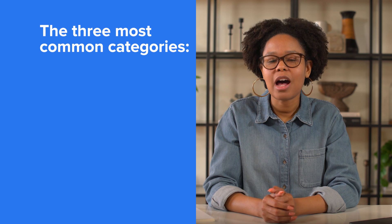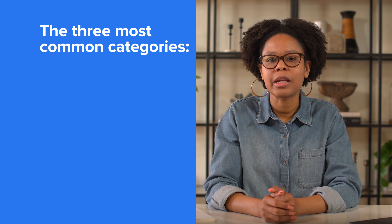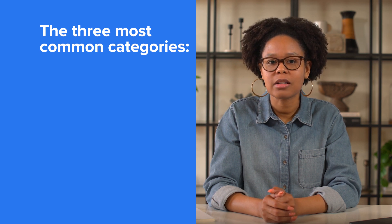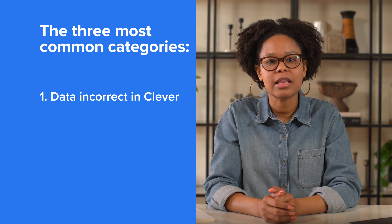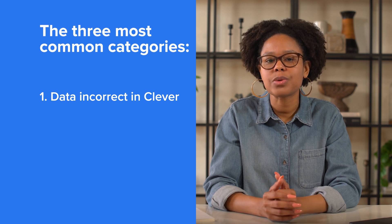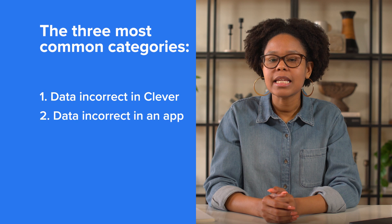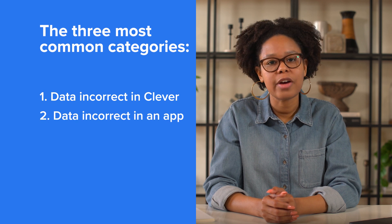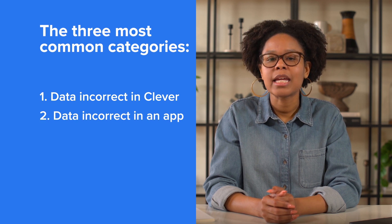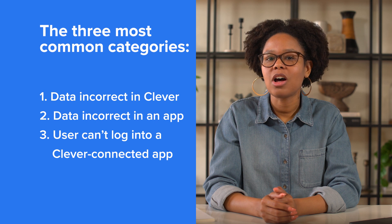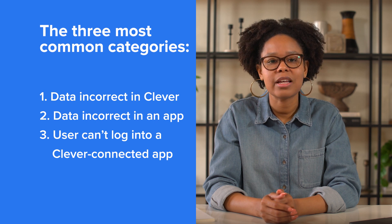By the way, this video is for Clever Admins. If you're a teacher or student, please contact your tech support team for help. The three most common categories where Clever Admins need help are: data is incorrect in Clever, such as missing users or classes; data is correct in Clever but incorrect in an app; and a user is having trouble getting logged into a program accessed via Clever.